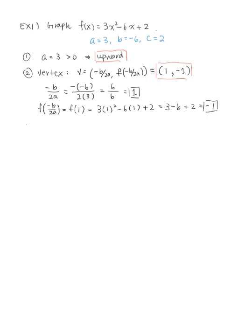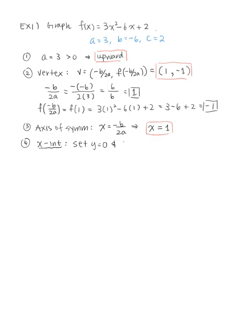Step 3: the axis of symmetry is x = the x-coordinate of the vertex, which is x = 1. Step 4: find the x-intercepts by setting 3x² - 6x + 2 = 0. This doesn't factor, so we apply the quadratic formula: x = (-b ± √(b² - 4ac)) / (2a), giving x = (6 ± √(36 - 24)) / 6 = (6 ± √12) / 6.